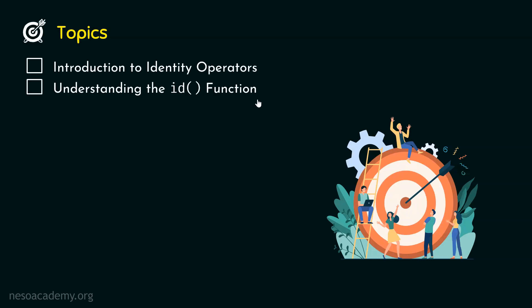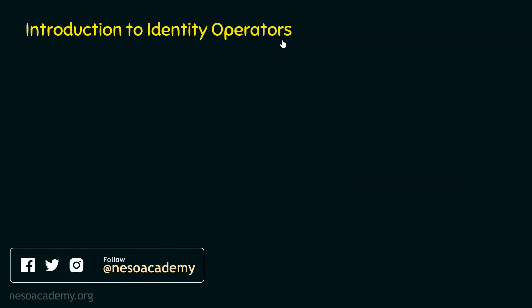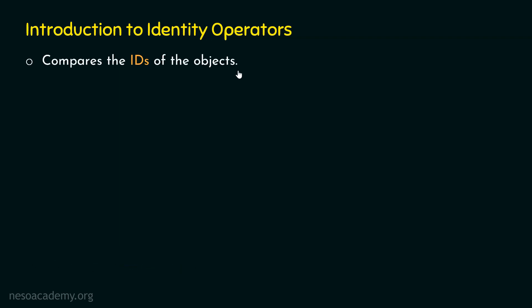Let's start with the first topic: Introduction to identity operators. What is an identity operator? Identity operator is an operator which has the capability to compare the ids of the objects. Unlike the equality operator, which compares values, the identity operator compares the ids of the objects.